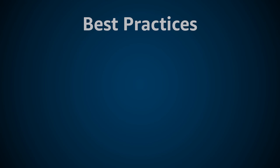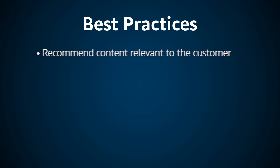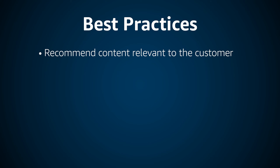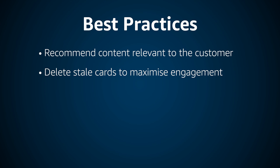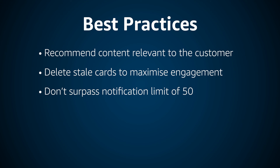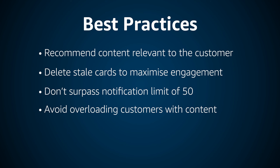Now that we've implemented recommendations, let's take a look at some of the best practices to bring the best customer experience possible. Starting with personalization — you want to make sure that the notifications you're sending to users are relevant to them. This could consist of recommending new episodes of a show that's previously been watched, picking up from where they originally left off, or even just related content. You also want to make sure that you're deleting stale cards like we covered earlier — it wouldn't make sense to recommend content the user has already engaged with or shown little interest in. It's also important to keep in mind that apps have a notification limit of 50, so make sure you don't go over this or your content won't get pushed out. You also want to limit the amount of recommendations you're showing at once, as overloading the customer with too much content is likely to drive down engagement.